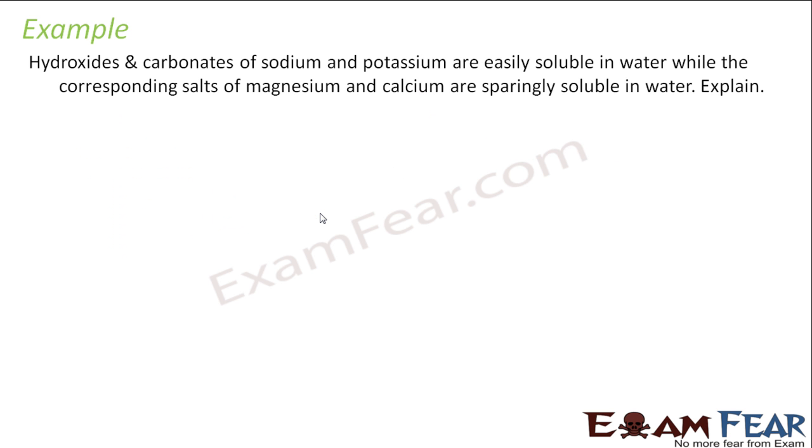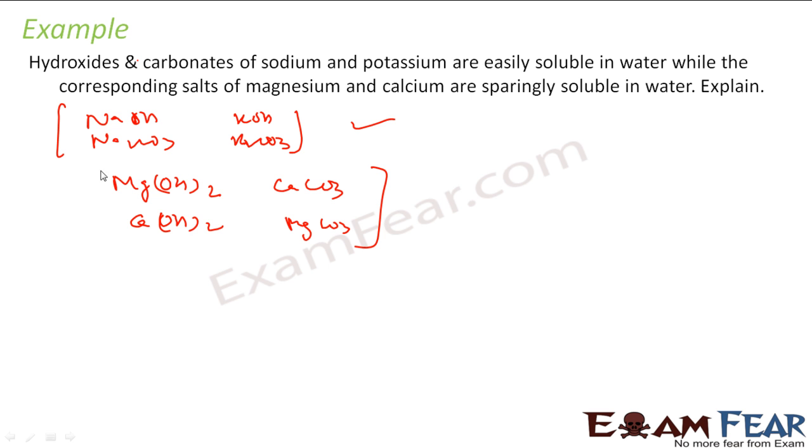The question says the hydroxides and carbonates of sodium and potassium - for example NaOH, Na2CO3, KOH, K2CO3 - are soluble in water. But the magnesium hydroxides and calcium hydroxides, or CaCO3, MgCO3, they are not soluble in water. Why?